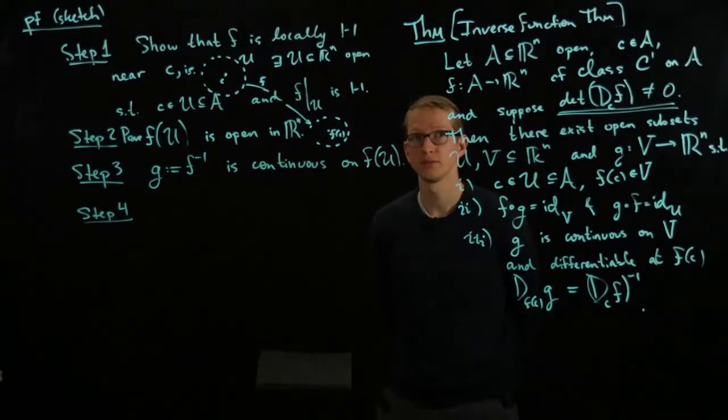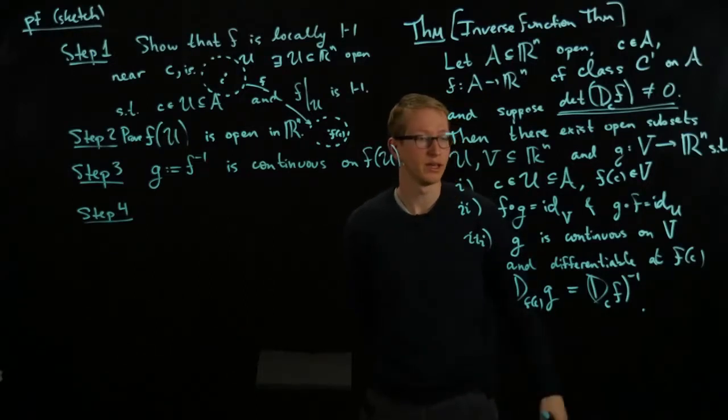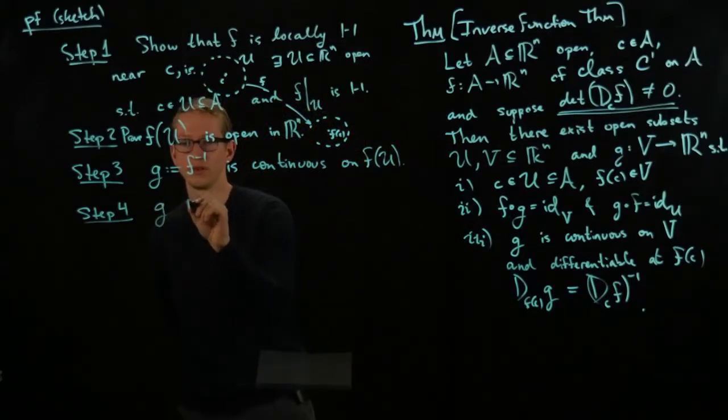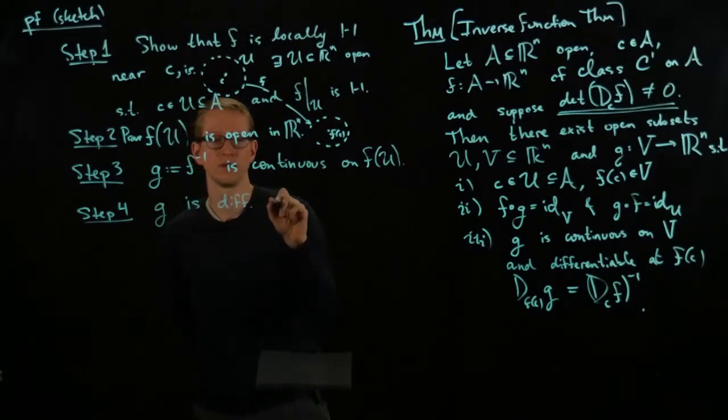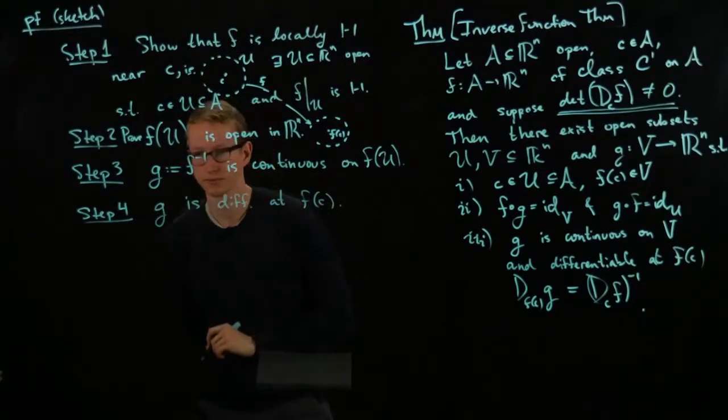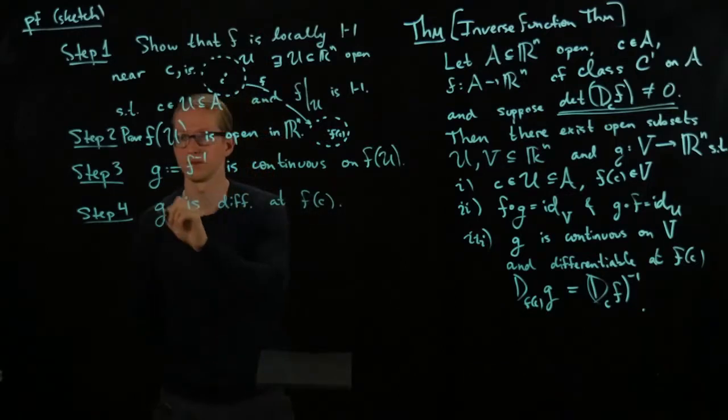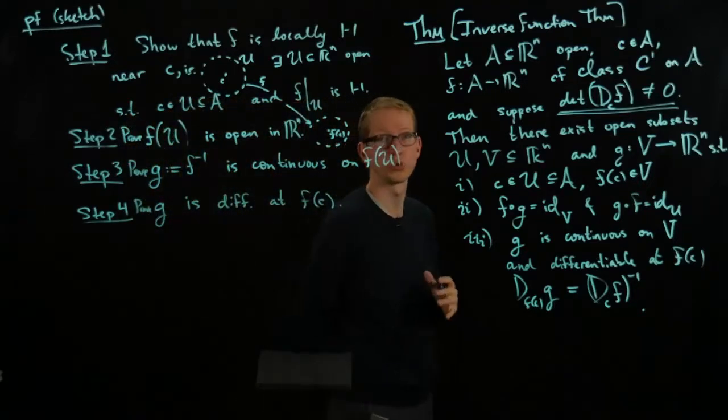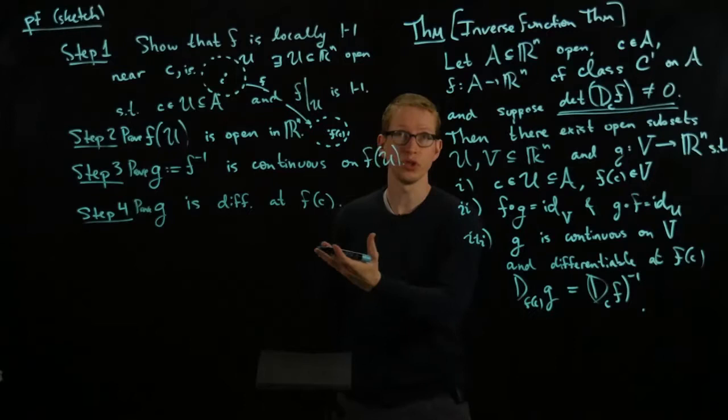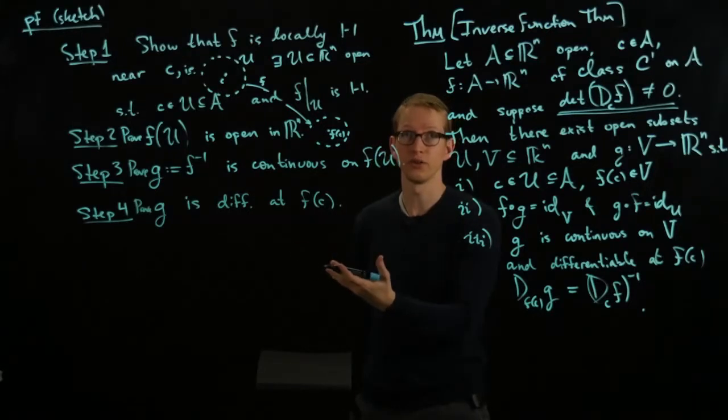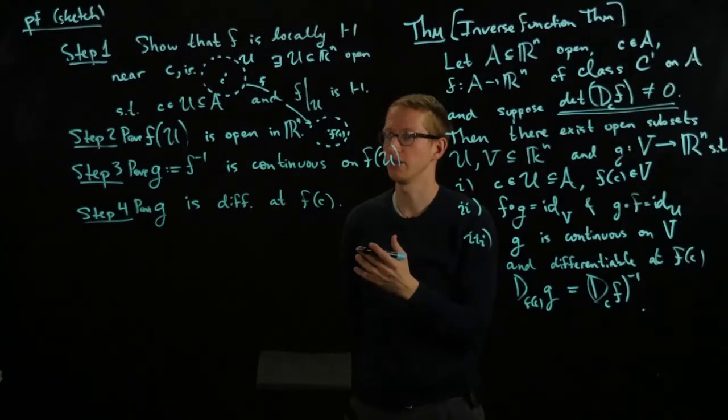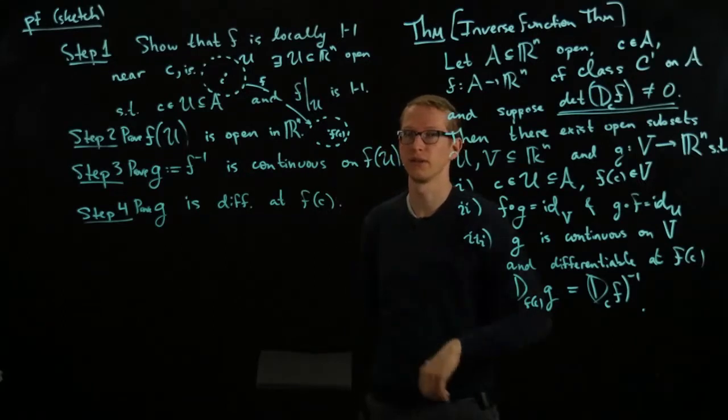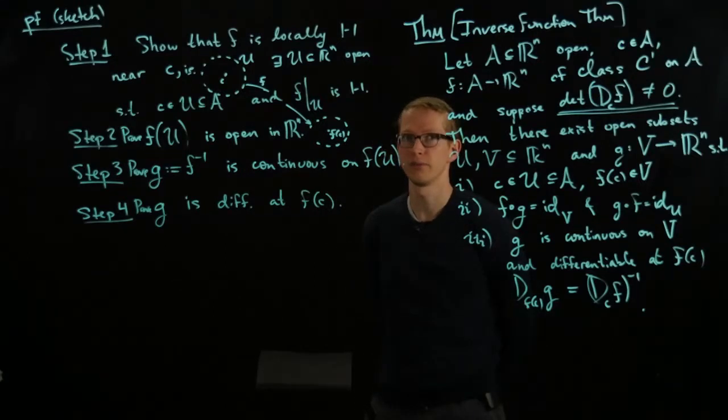The fourth step, which is maybe obviously the final step, is to prove that the function is differentiable. So, prove that G is differentiable at F of C. So, all of these are things that we would have to do to prove this theorem. Now, it's true that if we know that a function is differentiable on the entire domain, then it follows that it's continuous. But it turns out that if we try to prove this theorem by first trying to prove this, we'll see that we actually use a lot of step 3 in the proof of step 4.